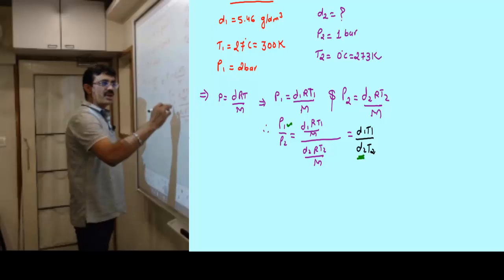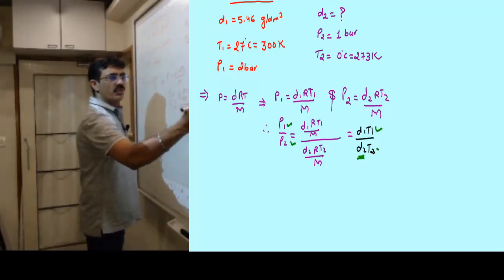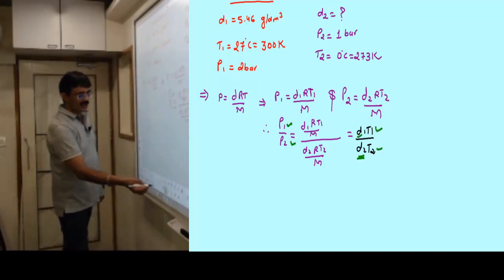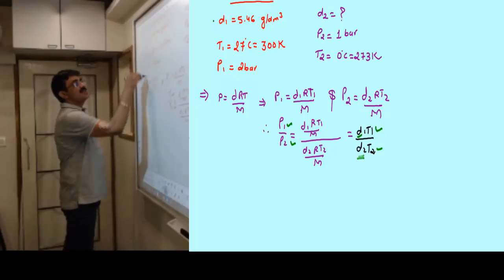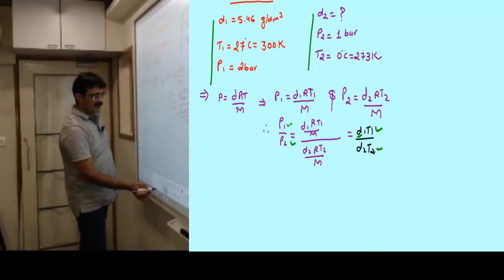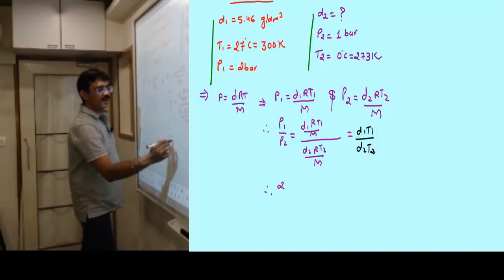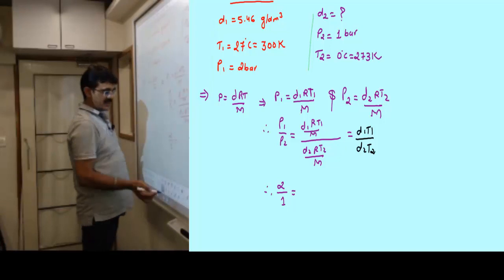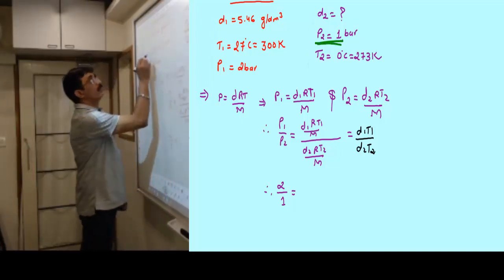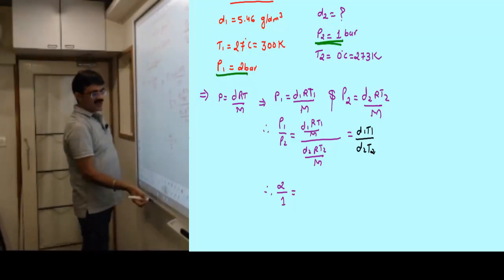We need to find density D2. The other values we have. Let's substitute. Pressure p1 is 2 bar, pressure p2 is 1 bar. Density D1 is 5.46. Temperature T1 is 300 Kelvin. D2 we need to determine and temperature T2 is 273 Kelvin.